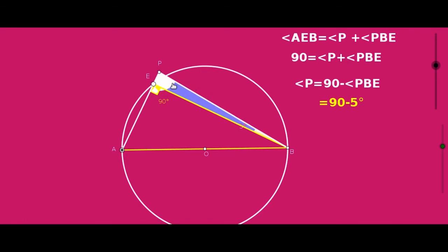If P is a point outside the circle, the angle made by P with the end points of the diameter is always less than 90 degrees.